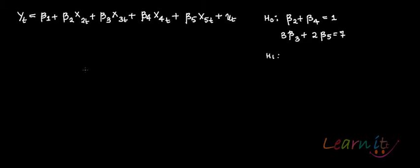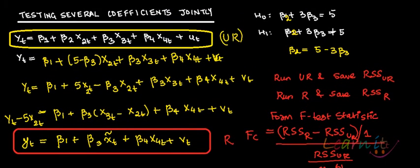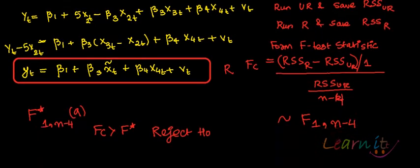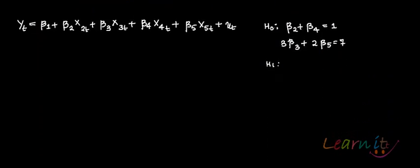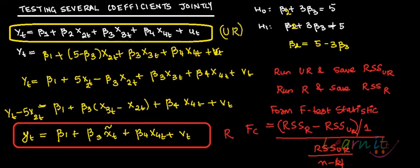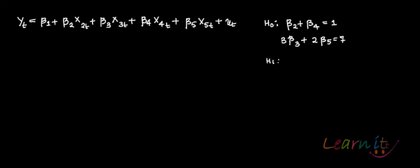In this recording, we will carry forward another example which we have done earlier — an example in which we tested several coefficients jointly. This is another example of that. There we had just one restriction which was beta 2 plus 3 beta 3 equals to 5. Here you have two restrictions: beta 2 plus beta 4 equals to 1, and 3 beta 3 plus 2 beta 5 equals to 7.